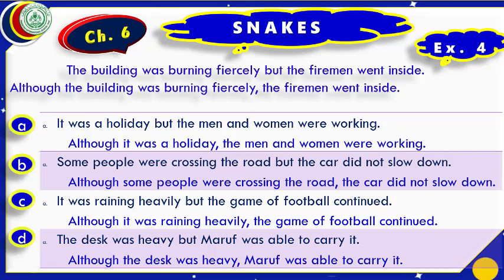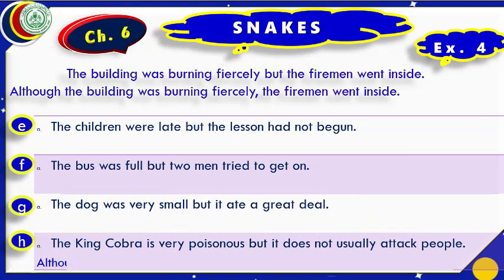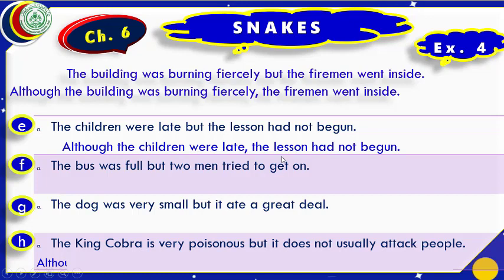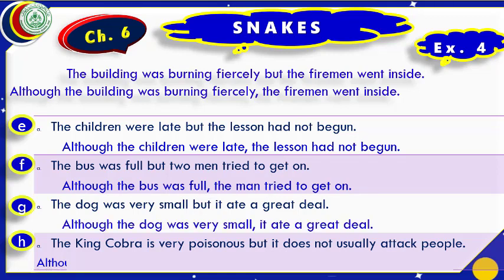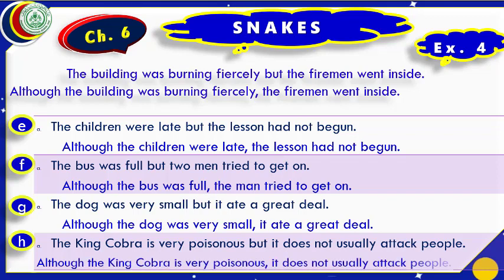Let us move to the next part of exercise 4. We add 'although' at the beginning and replace 'but' with a comma: 'Although the children were late, the lesson had not begun.' In the same way we complete all remaining answers — add 'although' at the beginning and replace 'but' with a comma. We have completed exercise 4.